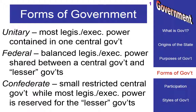And then we have something that's kind of in the middle, which we call a federal government, where there is power in the central government and also a significant amount of power in the localized governments. For example, in the United States we have a national government in Washington, D.C., that makes laws for everyone. But we also have state governments — Harrisburg in Pennsylvania, Annapolis in Maryland, Richmond in Virginia — where they make laws for those areas as well. We officially have a federal style of government.